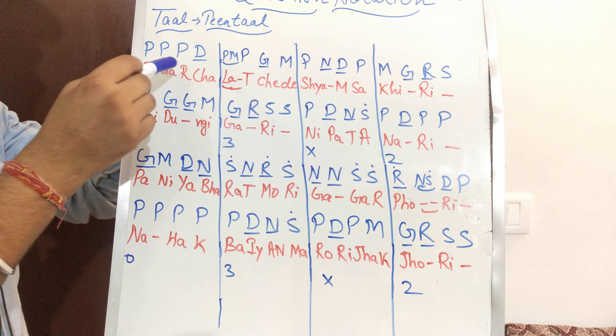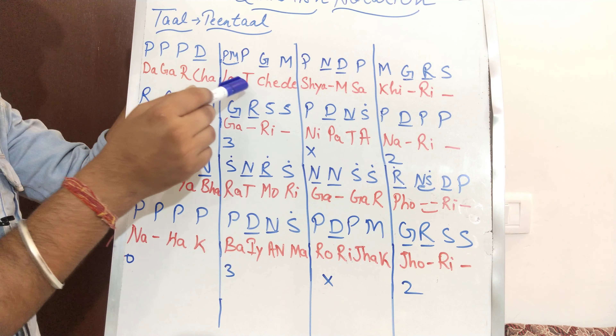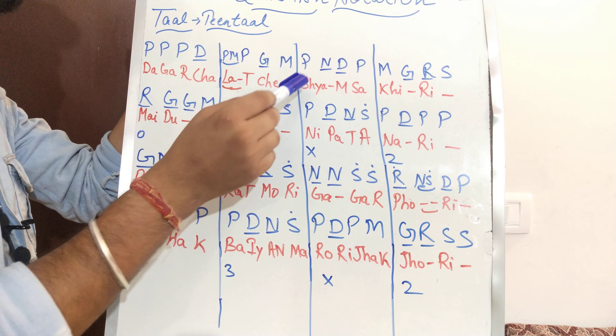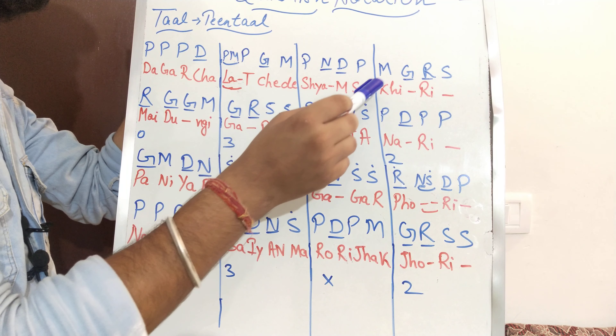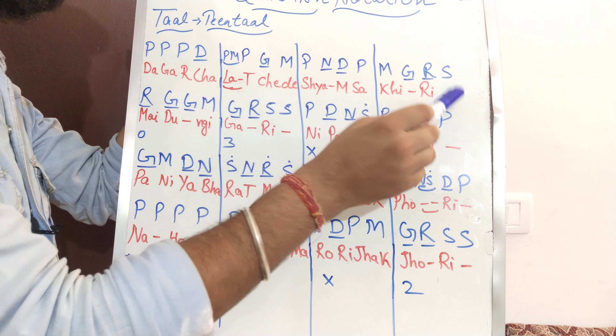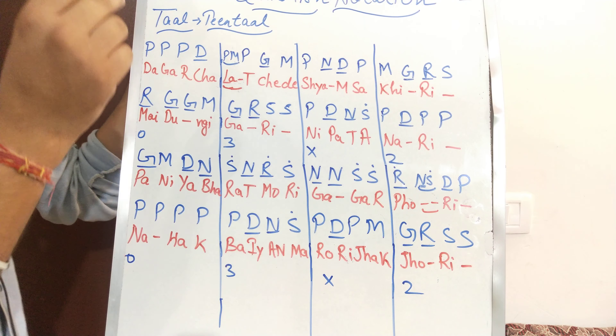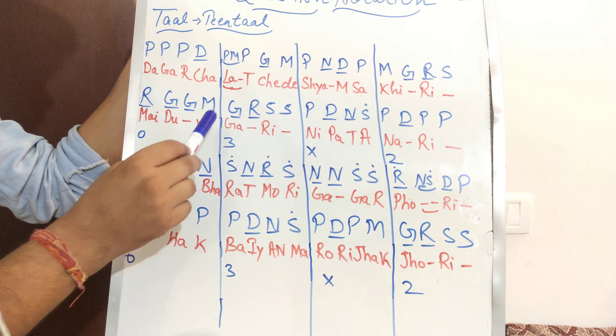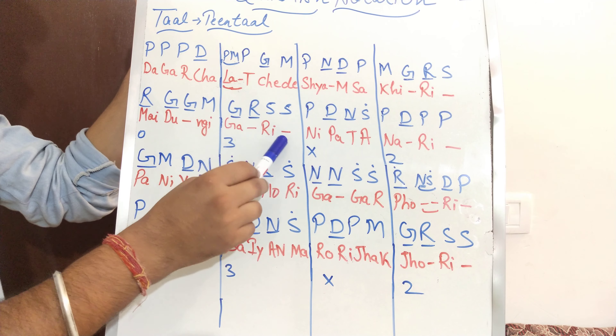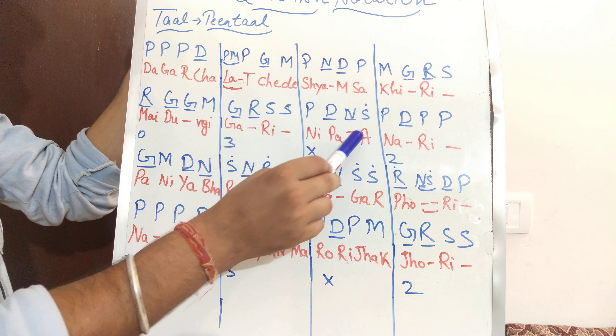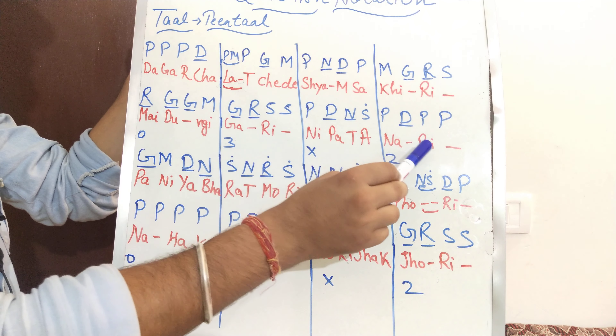Okay, the Sthai words are: Dagar, Chalat, Chede, Shyam, Sakheeri, May, Dungi, Gaari, Nepat, Anaadi. Now coming to the Antra.